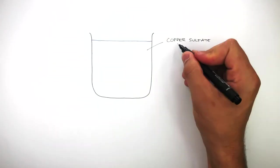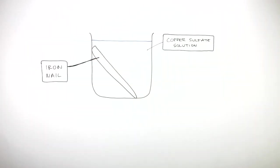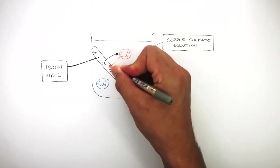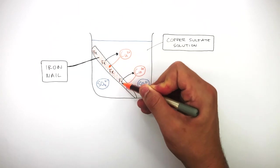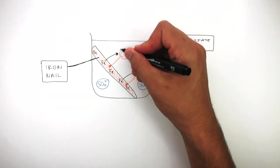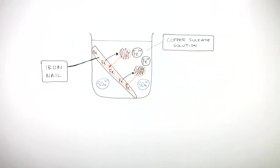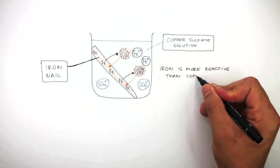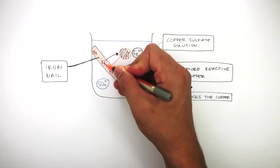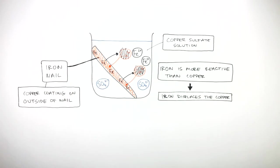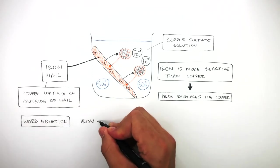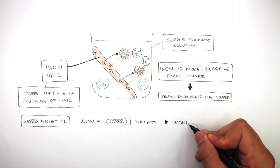Here we have a beaker containing copper sulfate solution. If we place an iron nail inside the copper sulfate solution, which contains copper ions and sulfate ions free to move, then because iron is more reactive than copper, the iron will displace the copper from the copper sulfate solution. The copper forms a coating on the outside of the iron nail, removing copper ions from the solution, and instead iron ions dissolve in the solution, having formed iron sulfate. The word equation for this reaction is: iron plus copper sulfate reacts to form iron sulfate and copper.